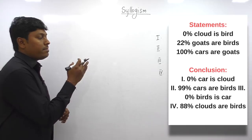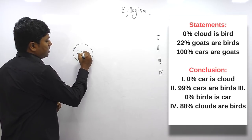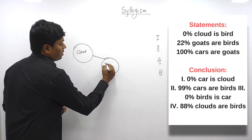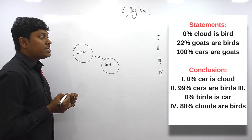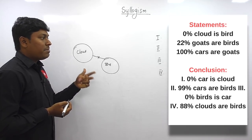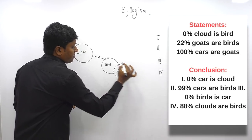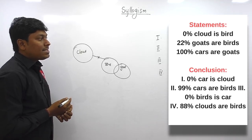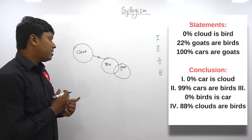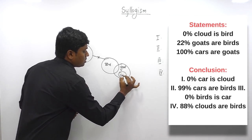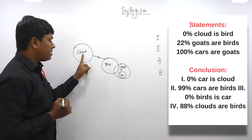Question 4. Zero percent cloud is bird — no cloud is bird. 22% goats are bird — some goats are birds. 100% cars are goats — all cars are goats. So all cars are goats, some goat is a bird, and there should not be any connection between cloud and bird. Conclusion 1: zero percent car is cloud — no car is cloud. We need to draw basic and possible diagram. There is a possible of connecting car with cloud, so conclusion 1 is false. Conclusion 2: 99% cars are birds — some cars are birds. There is no connection between car and bird, so conclusion 2 is false.